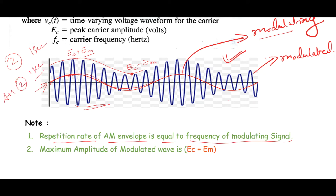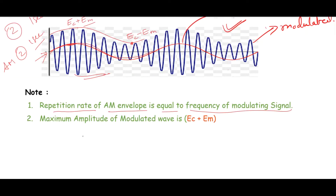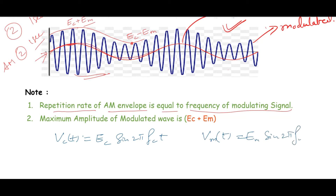This statement is very significant here, as it will make understanding the mathematical analysis of AM easier. We know that the mathematical expression for the carrier is EC sin(2π fc t), and the mathematical expression for the message signal is EM sin(2π fm t).